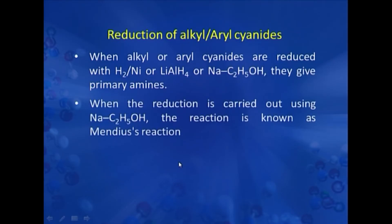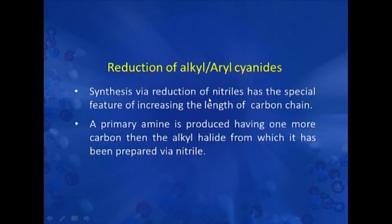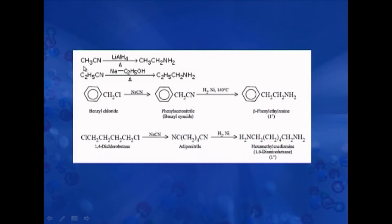The next method for preparation of amines is via reduction of alkyl or aryl cyanide. When alkyl or aryl cyanides are reduced with hydrogen and nickel, lithium aluminium hydride, or sodium in ethanol, they give primary amines. When the reduction is carried out using sodium and ethanol, the reaction is known as Mendius reaction. Alkyl cyanide upon reduction forms primary amines, and aryl cyanide also produces aromatic primary amines.